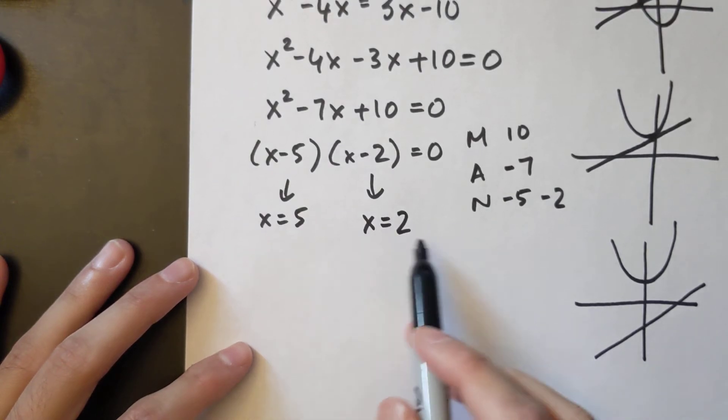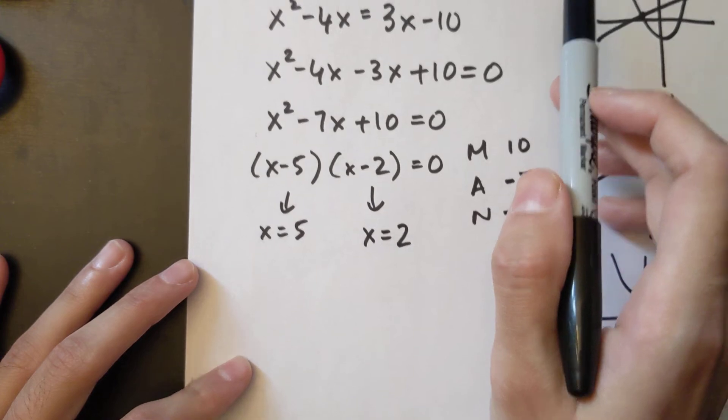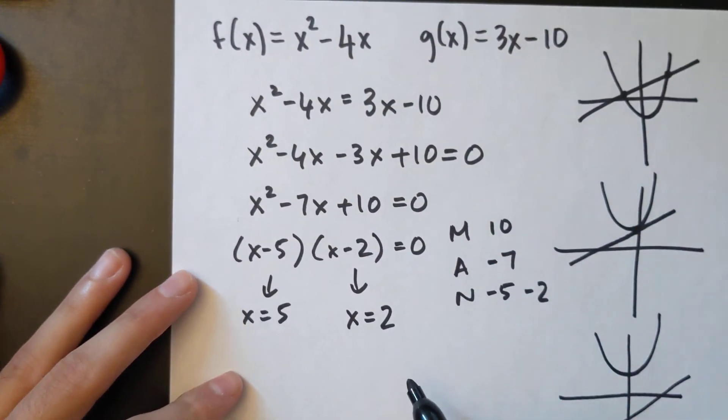Now these are only the x values of my points. I still need to find the y values of my points by solving it back into either of the original equations.